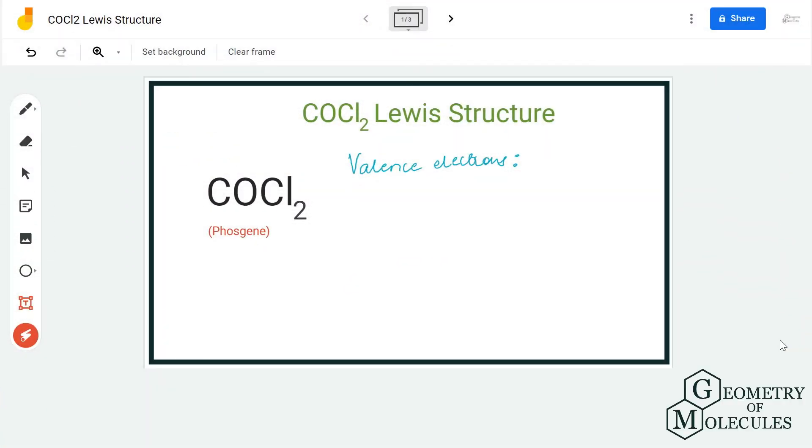Hi guys, welcome back to our channel. In today's video, we are going to look at the Lewis structure for COCl2. To determine its Lewis structure, we are first going to look at the total number of valence electrons for this molecule.